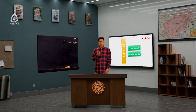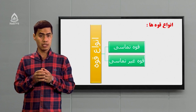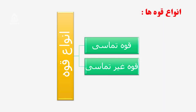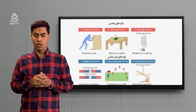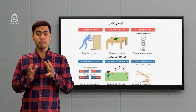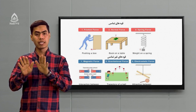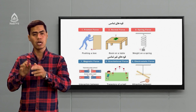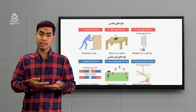قوه را دو دسته می‌تونیم تقسیم کنیم: قوه‌های تماسی و قوه‌های غیر تماسی. قوه تماسی زمانی ایجاد می‌شه که دو جسم برخورد فیزیکی با هم داشته باشن، یعنی حتماً تماس فیزیکی با همدیگر برقرار کنن. وقتی که شما یک جسم را هل می‌کنید، بین شما و جسم یک تماس فیزیکی برقرار می‌شه، قوه‌ای که وارد کردیم تماسیه.